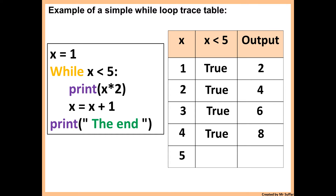Then 5 is not less than 5 — that's false. Because the condition is false, that's when we break the loop, and then we display the end.